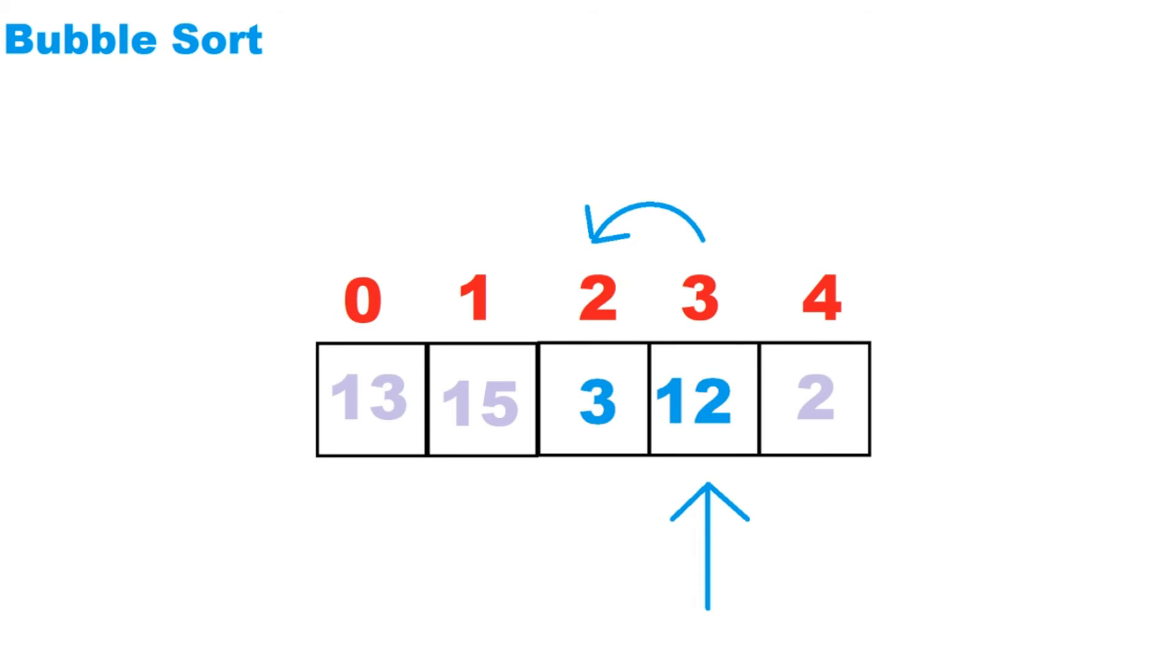We move on. Two is less than 12, so they get swapped. And now that we've reached the end of the list, we go back to cell one and start over again. I'll speed it up just so you have the visual of what's going on.